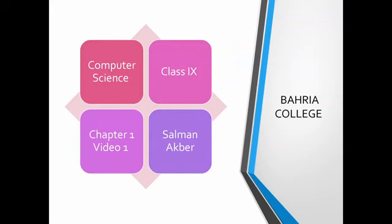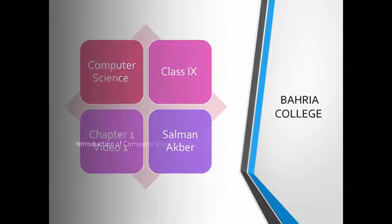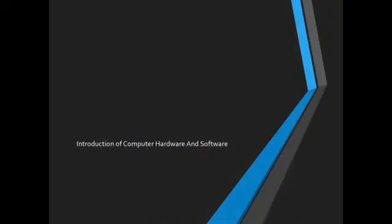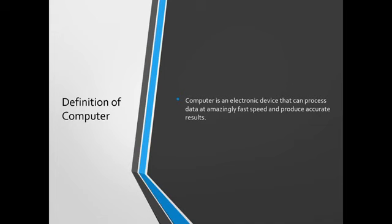Bismillahirrahmanirrahim. This is Salman Akbar and we will discuss computer hardware and software — the definition of computer hardware and software, and also the capabilities of computer in this lecture. First of all, we will discuss the introduction of computer. Computer is an electronic device that can process data at amazingly fast speed and produce accurate results.